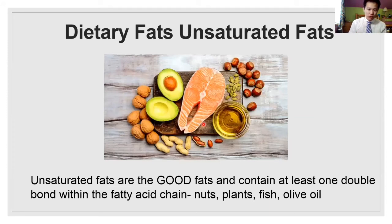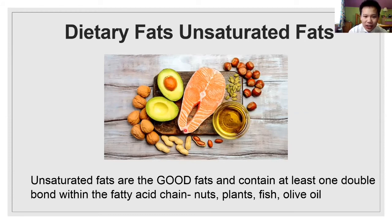So unsaturated fats - the key thing. Those are the good fats. In their structure, they have one double bond. These are foods like avocados, nuts, fish, olive oil. So when you go grocery shopping, try to incorporate some of these into your list so you can increase your intake of unsaturated fats in the long run.